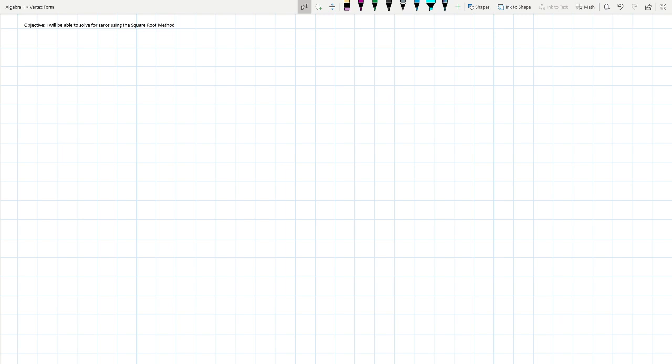This is lesson 9-4. Your objective today is that you'll be able to solve for zeros using the square root method. So what we're talking about today is kind of using our square roots to help us find some of these equations.